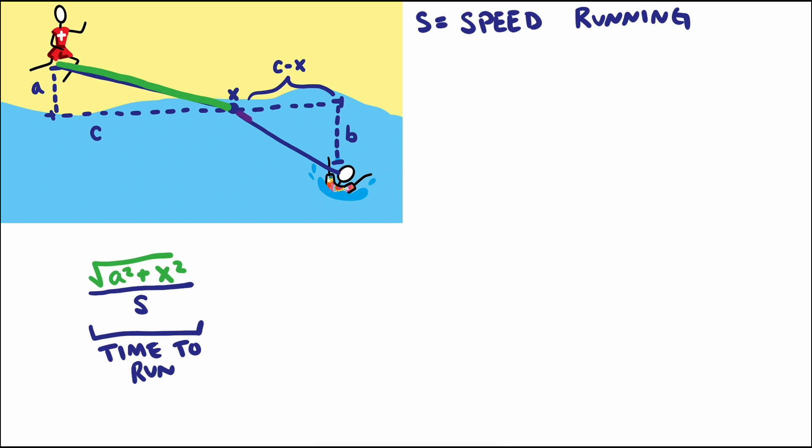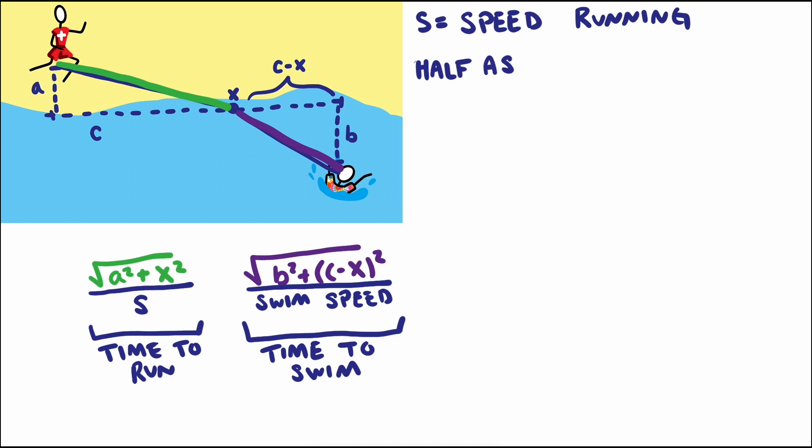Similarly, for the swimming portion of the trip, we can calculate the distance she'd swim, which is the square root of b squared plus quantity c minus x squared, and divide that by the speed she swims at. We can represent her swimming speed as a proportion of her running speed. For example, if she swam half as fast as she runs, then her swimming speed could be written as s divided by 2.